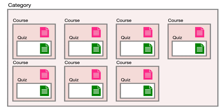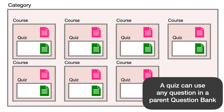The inspiration behind creating this video was somebody asked: we have multiple courses each with quizzes, all in one category — how could I see all the questions in all the quizzes? I initially thought that individual would have to be placed into every course as a Moodle teacher. But then I recalled: a quiz can use any question from a parent question bank. I looked at the Moodle documentation and lo and behold, you can actually have a question bank at category level, but it does need a bit of setting up by the Moodle administrator.